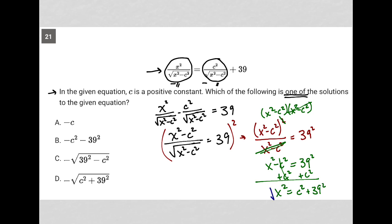I need to square root both sides, which would give me x is equal to plus or minus the square root of c squared plus 39 squared. And therefore, the answer must be choice d,